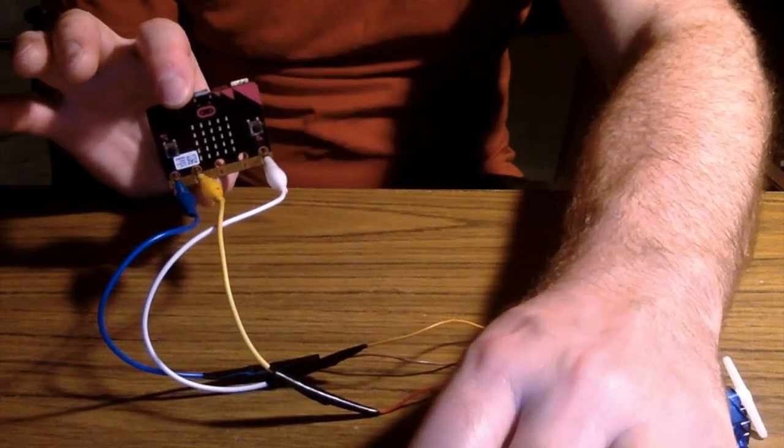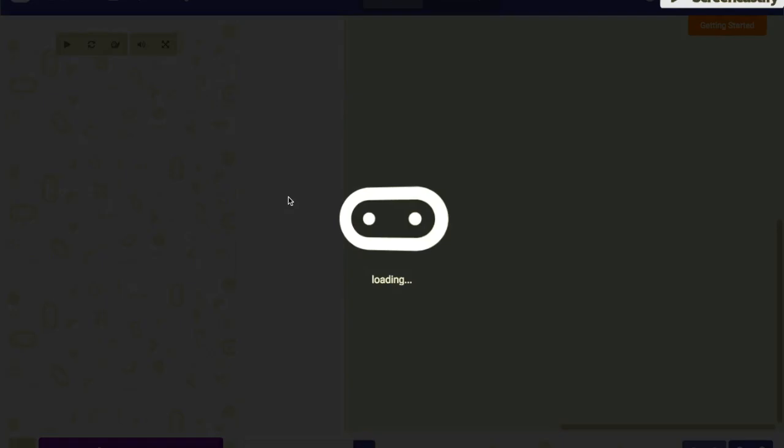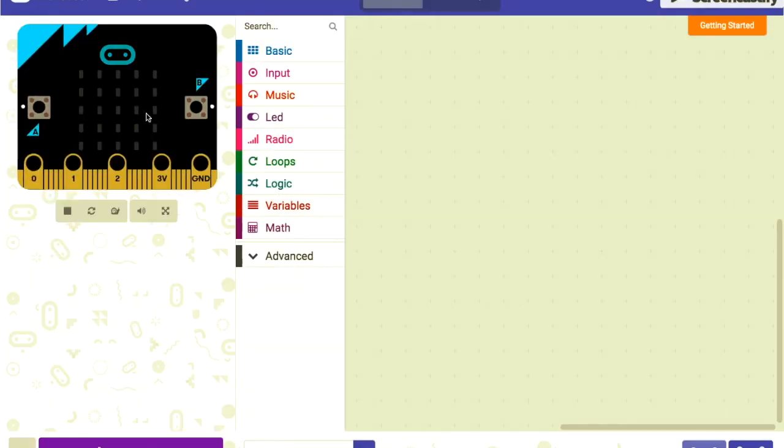To code the micro:bit we're gonna go to makecode.com. We click on micro:bit, then we can do all our coding right in here.